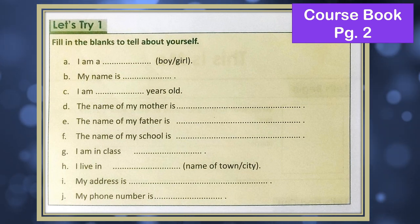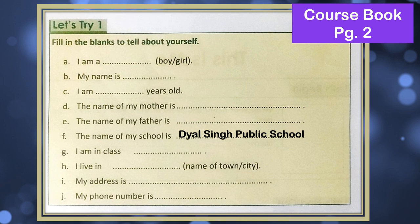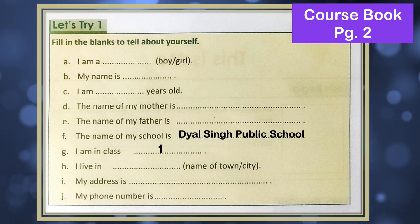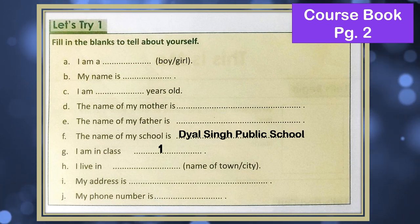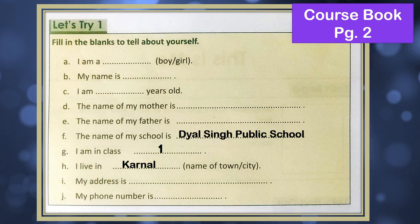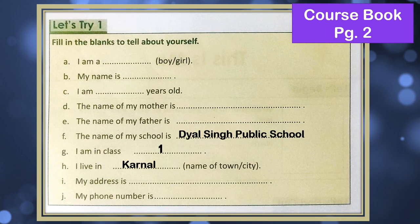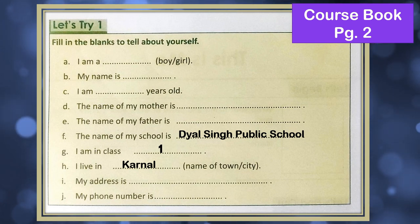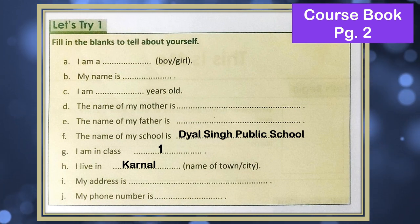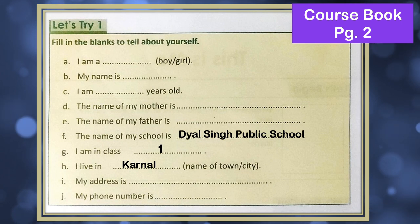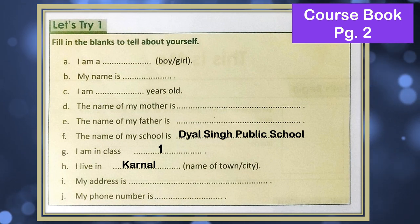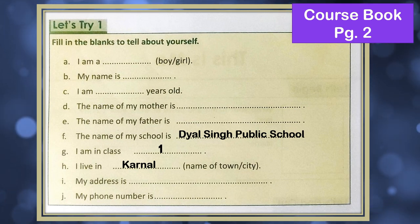Next one: The name of my school is — Dalsing Public School. I am in class one. I live in Karnal. My address is — now again, we have different addresses, so I am not writing the answer; you will take help from your parents and write down your address. My phone number is — here you will write down the phone number of your father or your mother. You can take their help, and after that you will memorize your address and your phone number also.